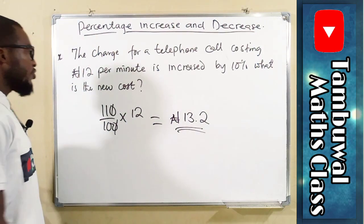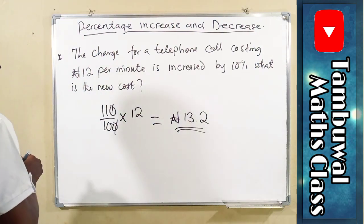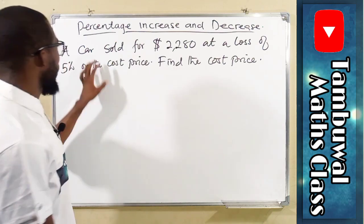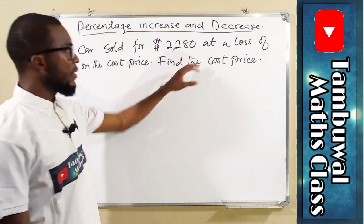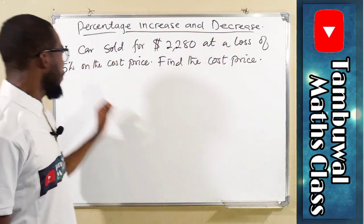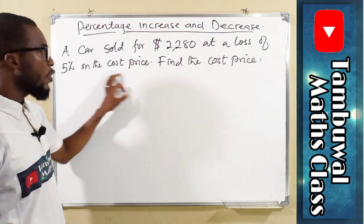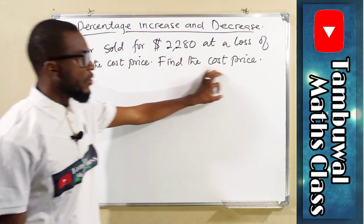Now let's look at the last question. The last question says: a car sold for $2,280 at a loss of 5% on the cost price. We are asked to find the cost price.